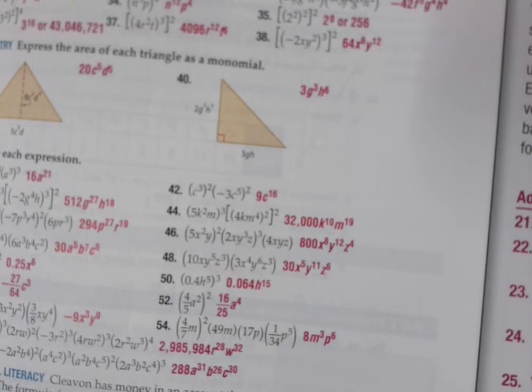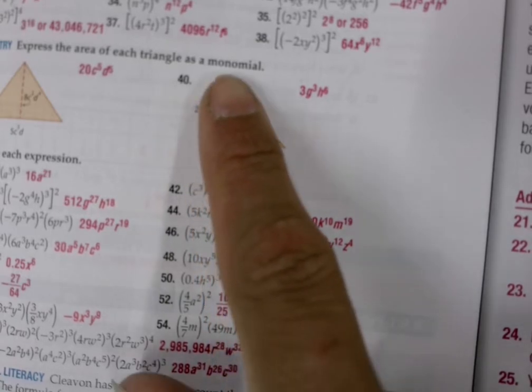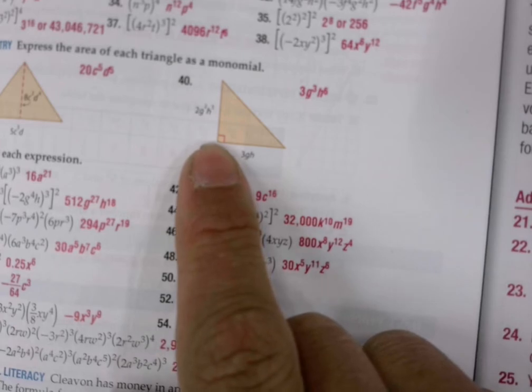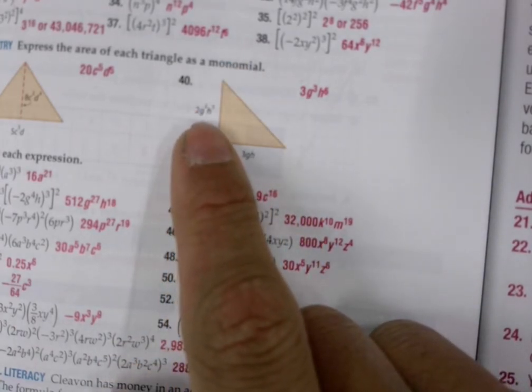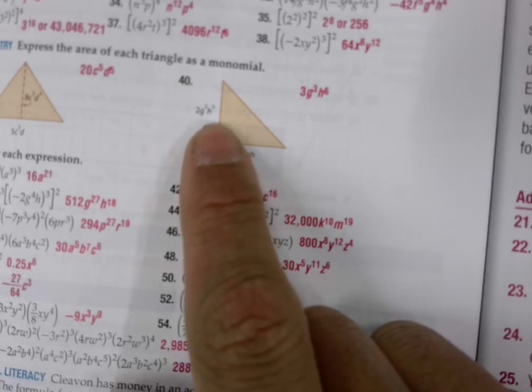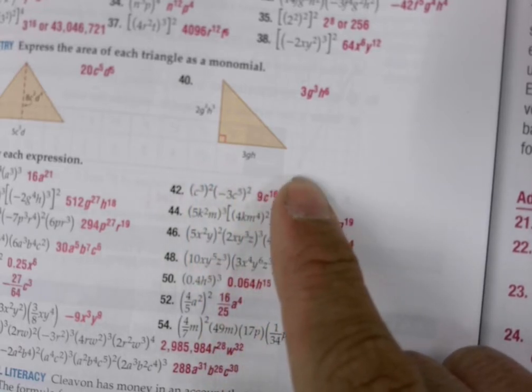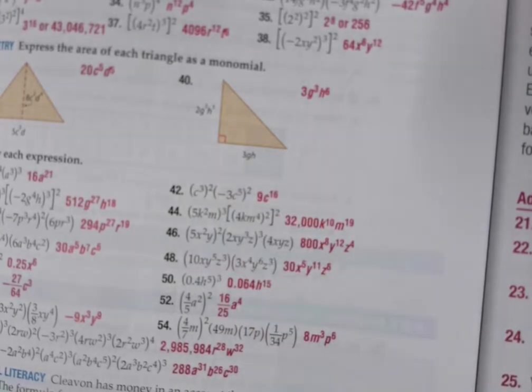So the next problem, number 15, is this one here. It's a little fuzzy, but it says this side of the triangle, the height of the triangle, is 2g squared times h to the 5. And then down here for the base of the triangle, it's 3 times g times h.